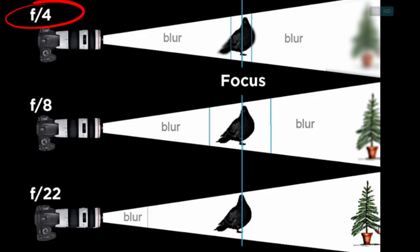In contrast, a higher aperture or f-stop allows less light into the camera and also results in an increased or greater depth of field, meaning a larger area of the photo will be in focus within the image.